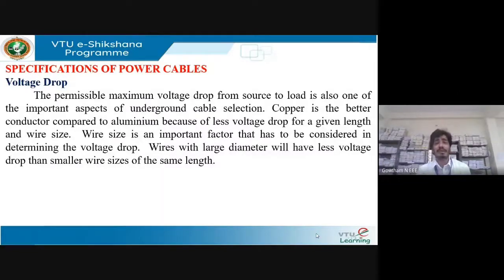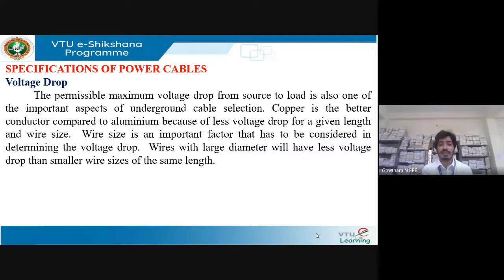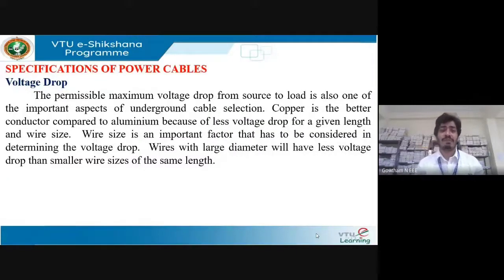The permissible maximum voltage drop from source to load is also important in selecting a UG cable. Copper is a better conductor than aluminum because it has less voltage drop for a given length and wire size. Wires with larger diameter have less voltage drop than smaller wire sizes of the same length.